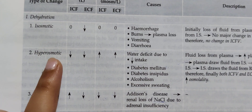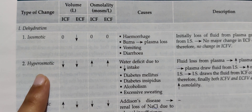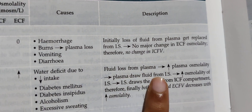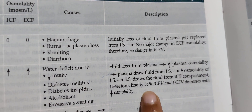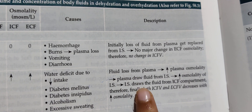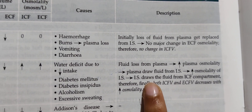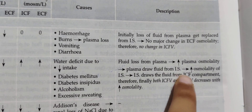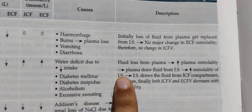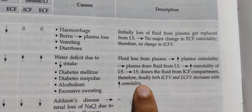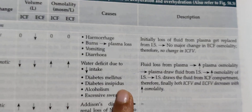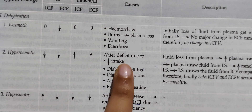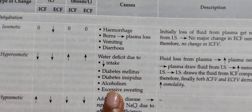In hyper-osmotic dehydration, only water is lost from the ECF, which increases plasma osmolality because no solutes are lost. The plasma draws fluid from the interstitial space, which increases interstitial osmolality, which in turn draws fluid from the ICF. Therefore, both compartment volumes decrease and osmolality increases in both. This happens in water deficit states, decreased water intake, diabetes, alcoholism, and sweating.